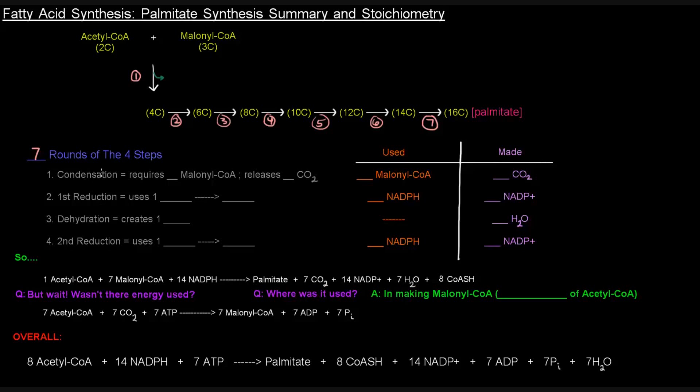Each condensation reaction required one malonyl-CoA, and it would release one carbon dioxide. Now, because this happened seven times, we're going to multiply all this stuff by seven to find out what we used and what we made. So we used a malonyl-CoA in each condensation step. So seven condensation steps total means we used seven malonyl-CoAs. We released one carbon dioxide each of those times. So that means seven carbon dioxides should be released.